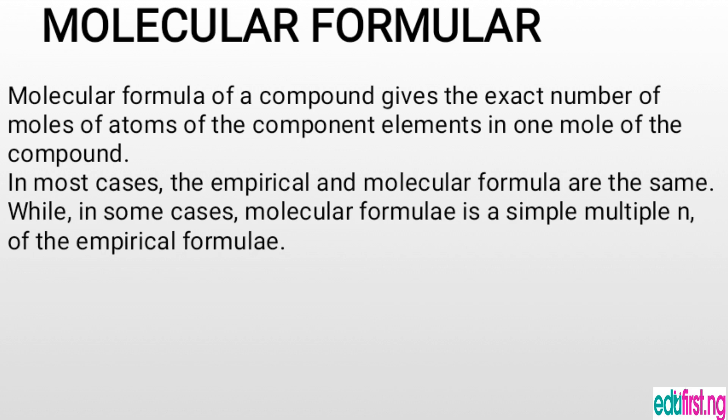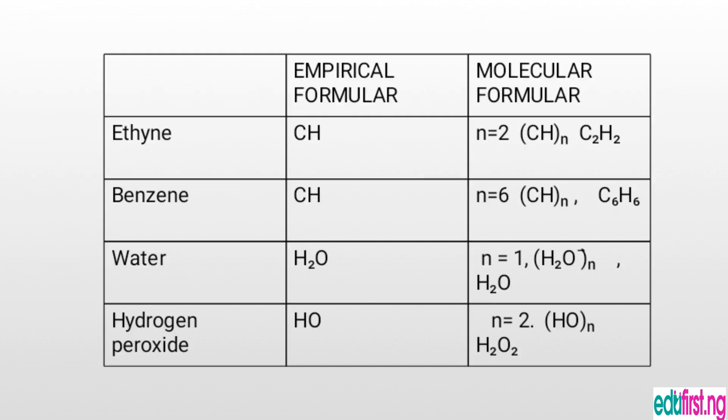Let me explain that. We have a compound called acetylene. Its empirical formula is CH. Its molecular formula is (CH)n where n is 2, so we have C₂H₂. The molecular formula gives us the exact number of moles of atoms: the number of moles of carbon is 2 and the number of moles of hydrogen is 2.